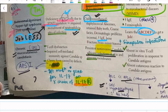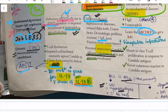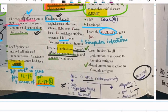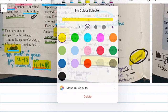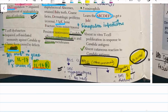Chronic mucocutaneous candidiasis (CMC) is a non-invasive candidal infection of skin and mucous membranes. It occurs due to mutation in IL-17 or the gamma chain of IL-17 receptors, or due to mutation in AIRE gene. AIRE is responsible for presenting self-antigens, so if mutated it causes autoimmunity — leading to APS (autoimmune polyendocrine syndrome). APS type 2 is the more common one and includes hypothyroidism and type 1 diabetes. APS type 1 is less common and includes hypoparathyroidism and chronic mucocutaneous candidiasis.